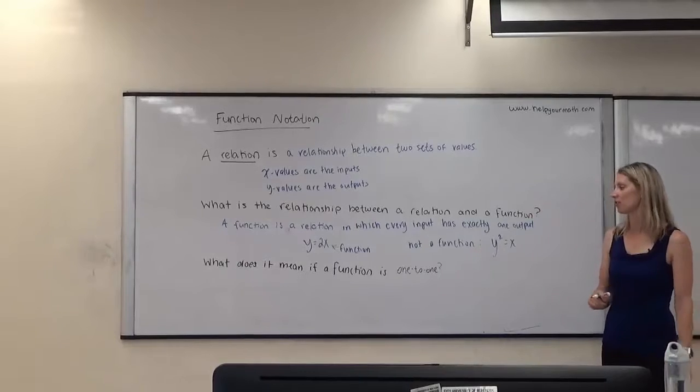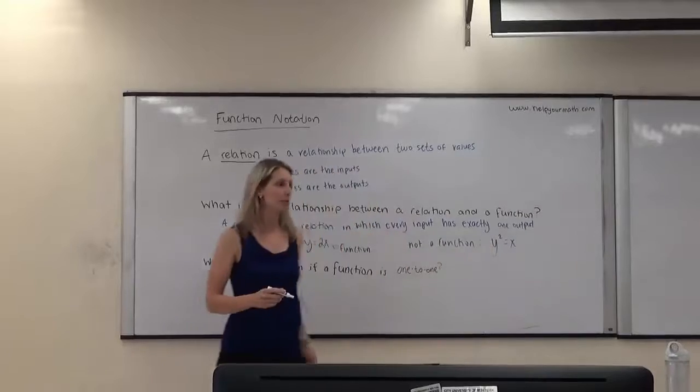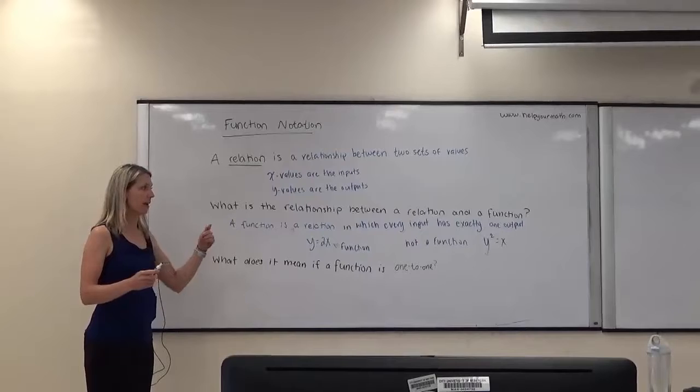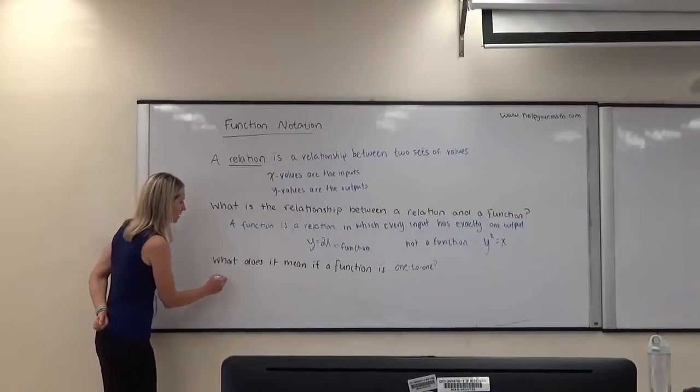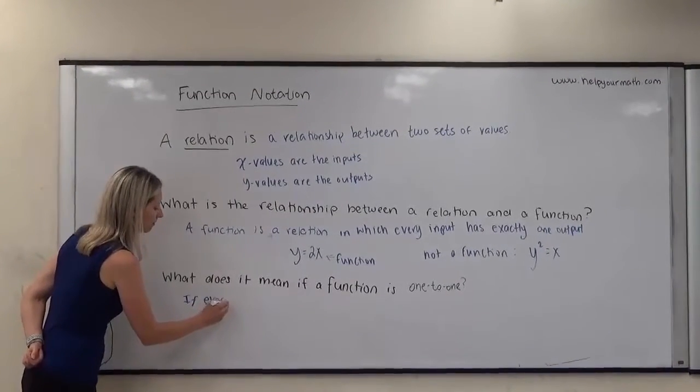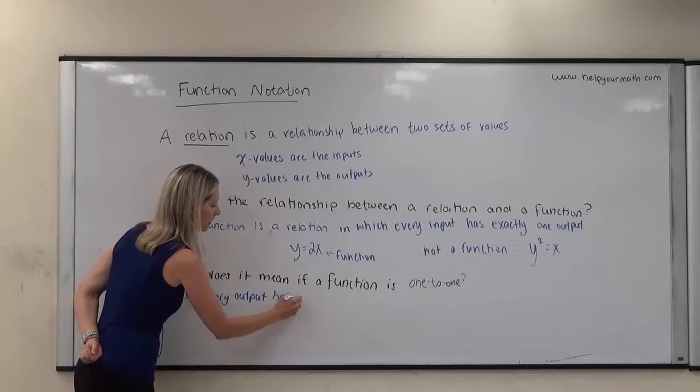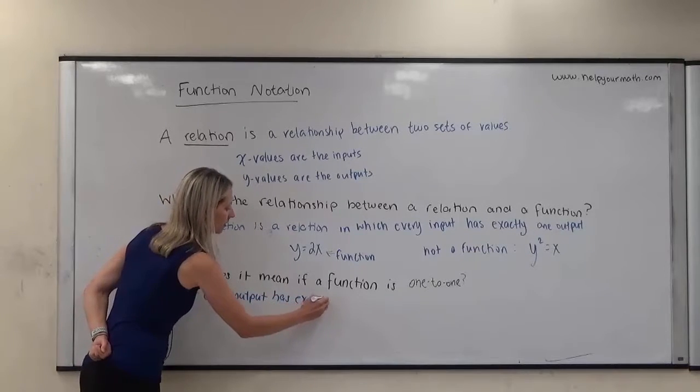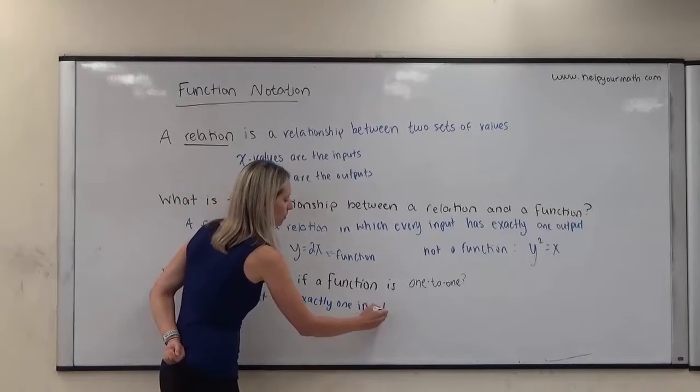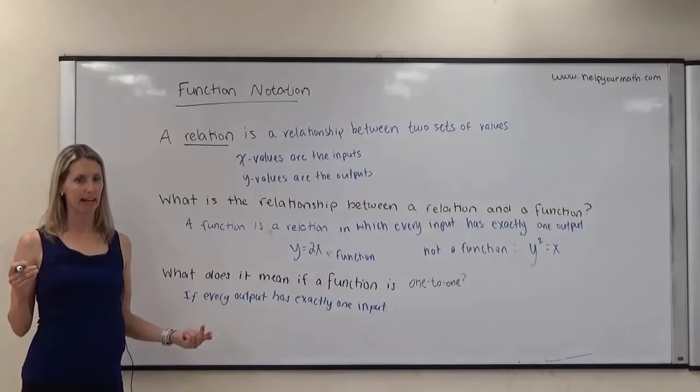What does it mean if a function is 1 to 1? When I described the function, I said that every input has exactly one output. For it to be 1 to 1, that means that also every output has exactly one input. So now both have to be true: every input has exactly one output and every output has exactly one input.